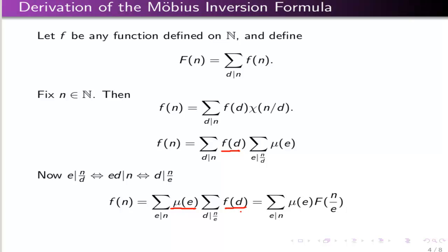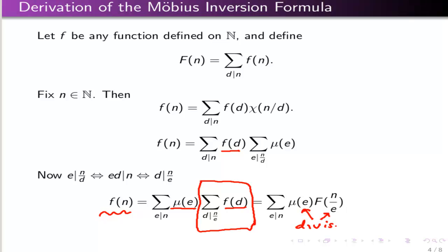After switching the order of summation, the inner sum over d of f of d where d divides n over e is precisely the definition of capital F evaluated at n over e. So we arrive at: f of n equals the sum over the divisors of n of the Möbius function evaluated at e, times capital F evaluated at n over e. Think of these as divisor pairs — pairs of numbers whose product is n. And that is exactly the Möbius inversion formula.